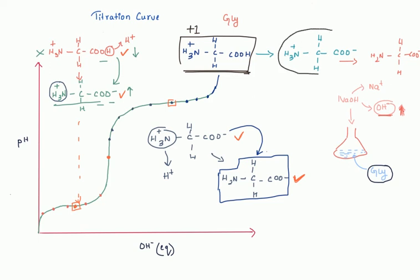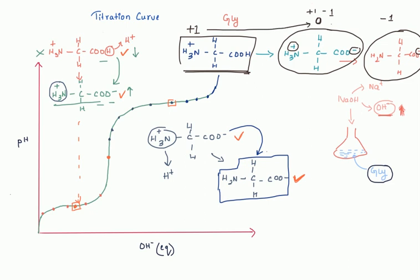The final fully deprotonated form has only COO⁻ and NH2, giving an overall charge of −1. So the charge on glycine gradually moves from +1 toward 0 (neutral) and then to −1 as the pH is raised.